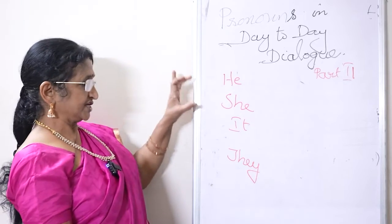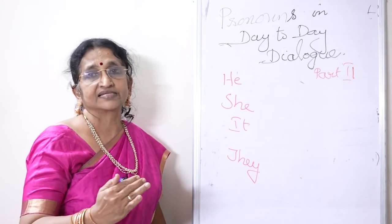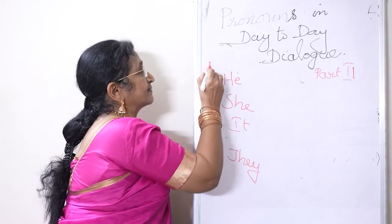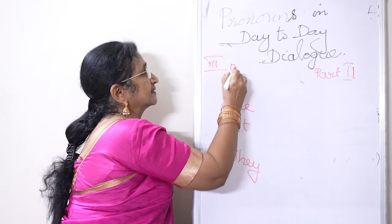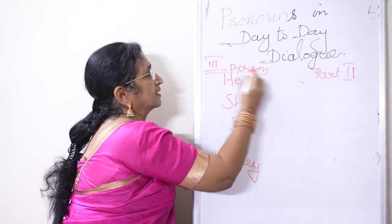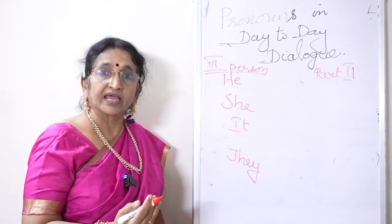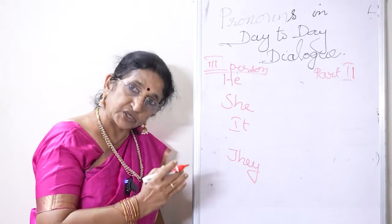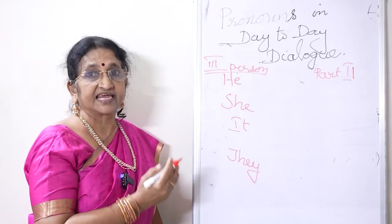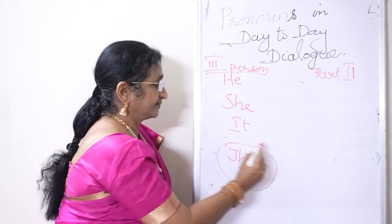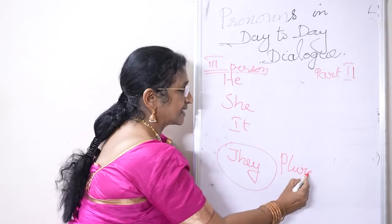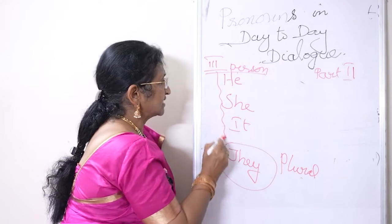He, she, it — in lower classes we have studied these in grammar. He, she, it, they are called the third person. First person is I and we; second person is you, both for singular and plural. In third person we have he, she, it, and they. They is for plural, and he, she, it are all for singular.